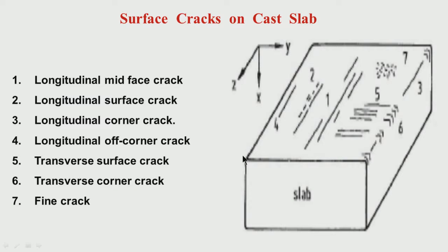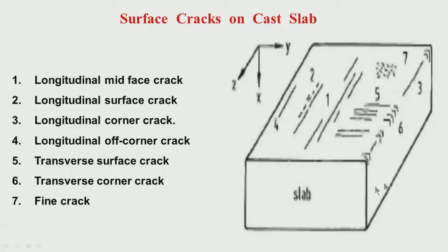What is basically a slab? Slab means the width is more than the thickness, then we call it a slab. The width can be about 1 meter, more than a meter, maybe 1500 millimeters — that means 1.5 meters — and the thickness may be only 200 millimeters or 150 millimeters. If the width is more than the thickness, we call it a slab.